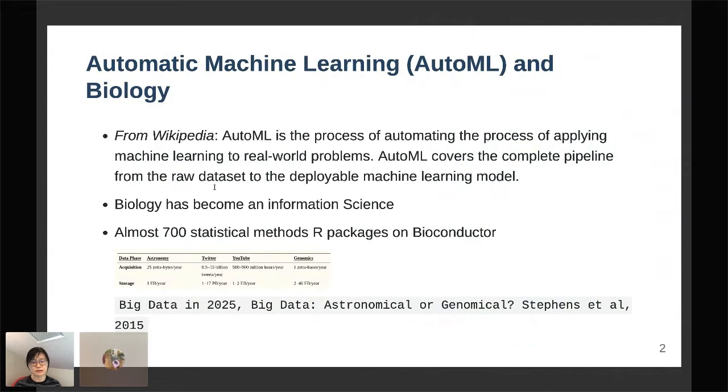We are not lacking statistical methods for analyzing all sorts of biological data. There are almost 700 statistical methods written in R hosted on Bioconductor, which is an open source software platform.